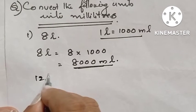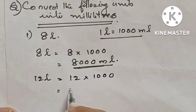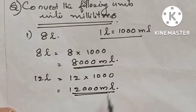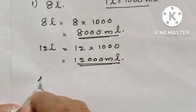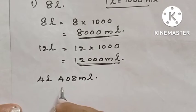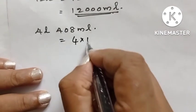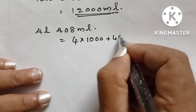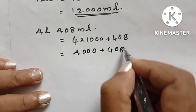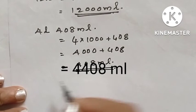The next question involves four liters and four hundred and eight milliliters. Four hundred and eight is already in milliliters, therefore no need to convert. Four liters equals four thousand milliliters. Four thousand plus four hundred and eight equals four thousand four hundred and eight milliliters.